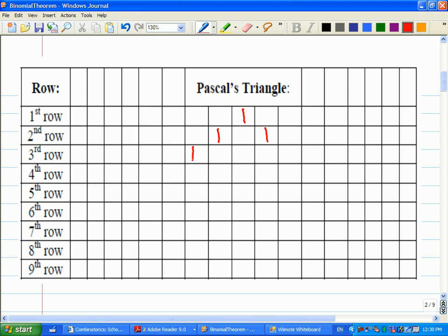The edge of Pascal's Triangle has all 1s. And the way you get the middle terms is you add the 2 above.